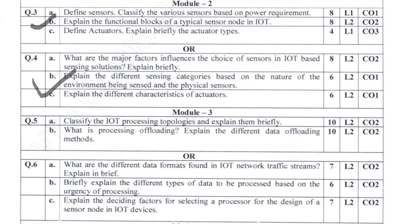Module 3 question: Classify IoT processing topologies and explain them briefly — you will tell the different processing topologies. The second question is: What is process offloading? Explain different data offloading methods. You will completely determine what process offloading is and what different data offloading methods are available. That is 10-10 marks, totaling 20 marks.